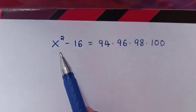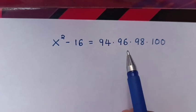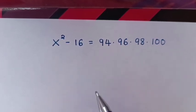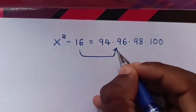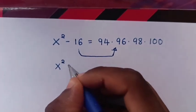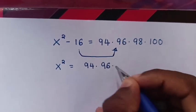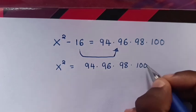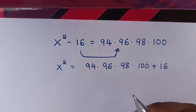Hello. How to solve x squared minus 16 is equal to 94 times 96 times 98 times 100, to find the value of x. First, we take this negative 16 to the right side. So it will be x squared is equal to 94 times 96 times 98 times 100 plus 16.